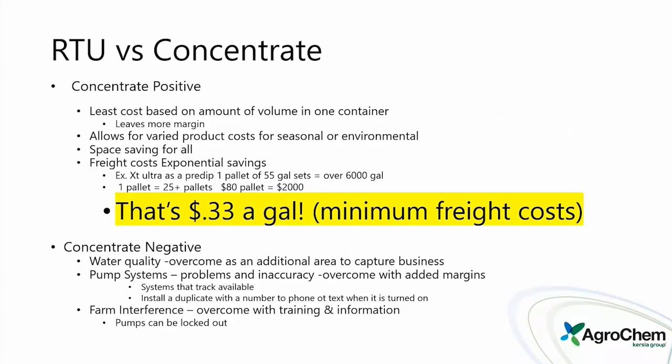Concentrate positives: lowest cost per volume in one container, and allows flexible product adjustments for seasonal or environmental conditions — easily changing ppm strength or emollient package based on weather. Space savings for everyone. On freight costs alone, even at a low rate of $80 per pallet, factoring in XT Ultra pre-dip at concentrate mixing ratios yields savings of about 30 cents per gallon. Long-distance freight makes concentrates even more cost-effective.